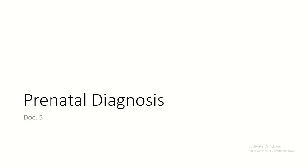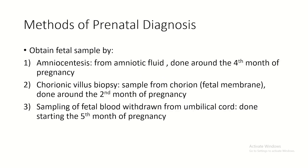Lastly, in the last document, we talk about prenatal diagnosis - diagnosis before birth. We must first obtain a fetal sample, which can be done by three techniques: amniocentesis, where we take amniotic fluid (done at the fourth month); chorionic villus biopsy, where we take a sample from the fetal membrane (done around the second month); and fetal blood sampling from the umbilical cord (done starting the fifth month).